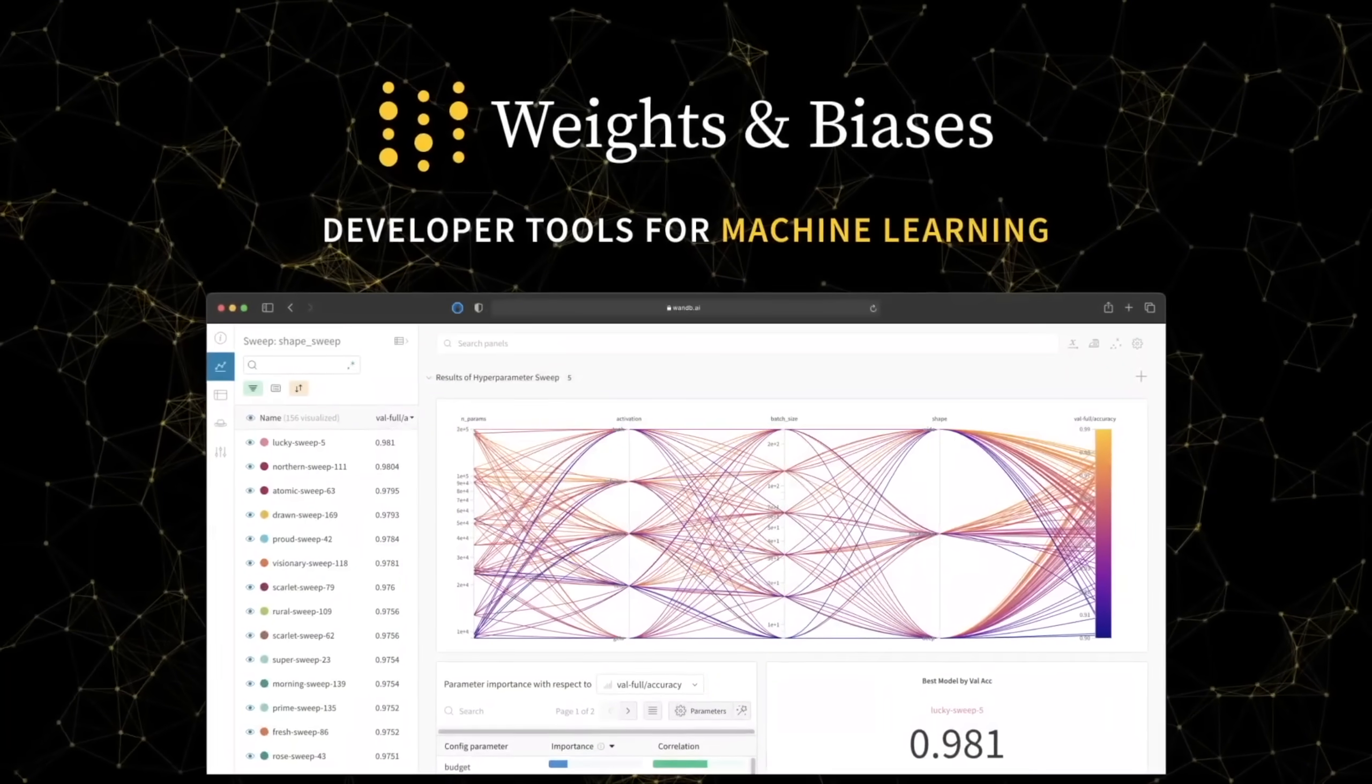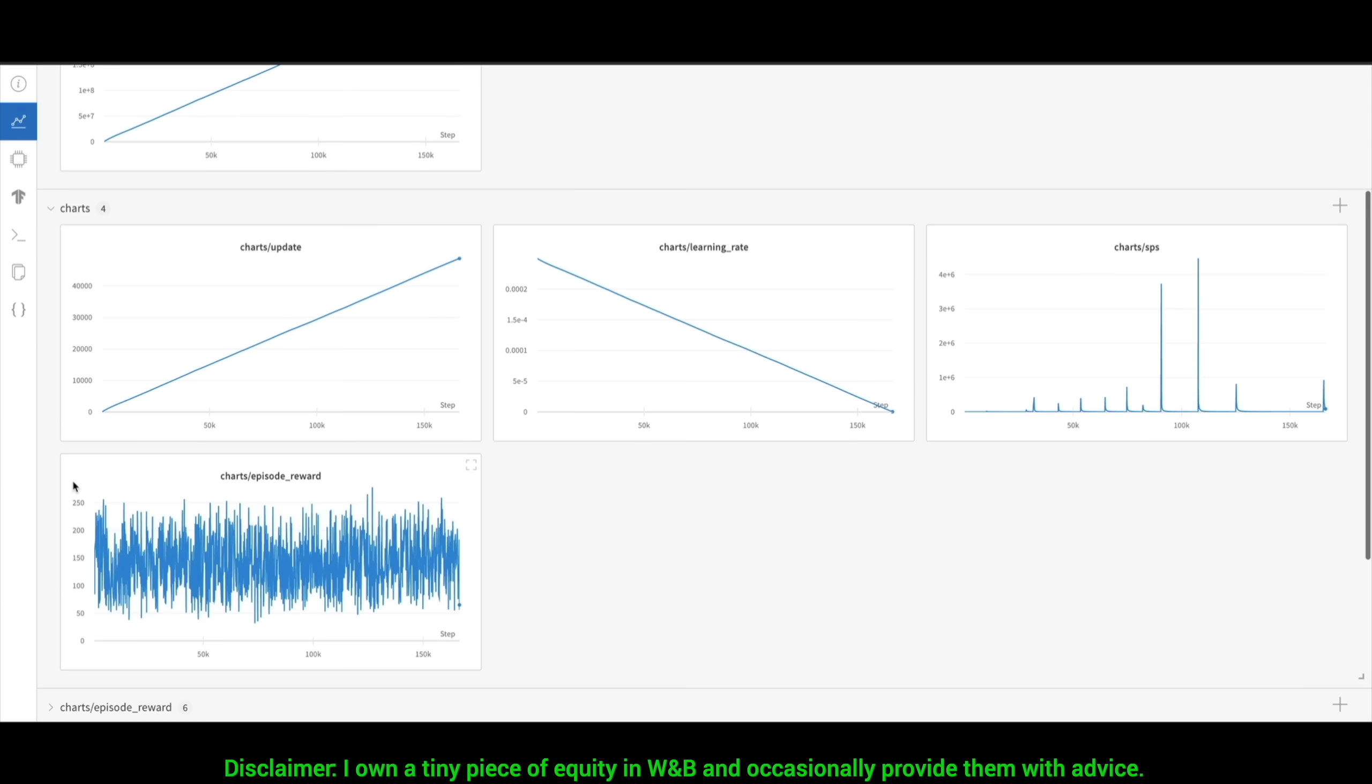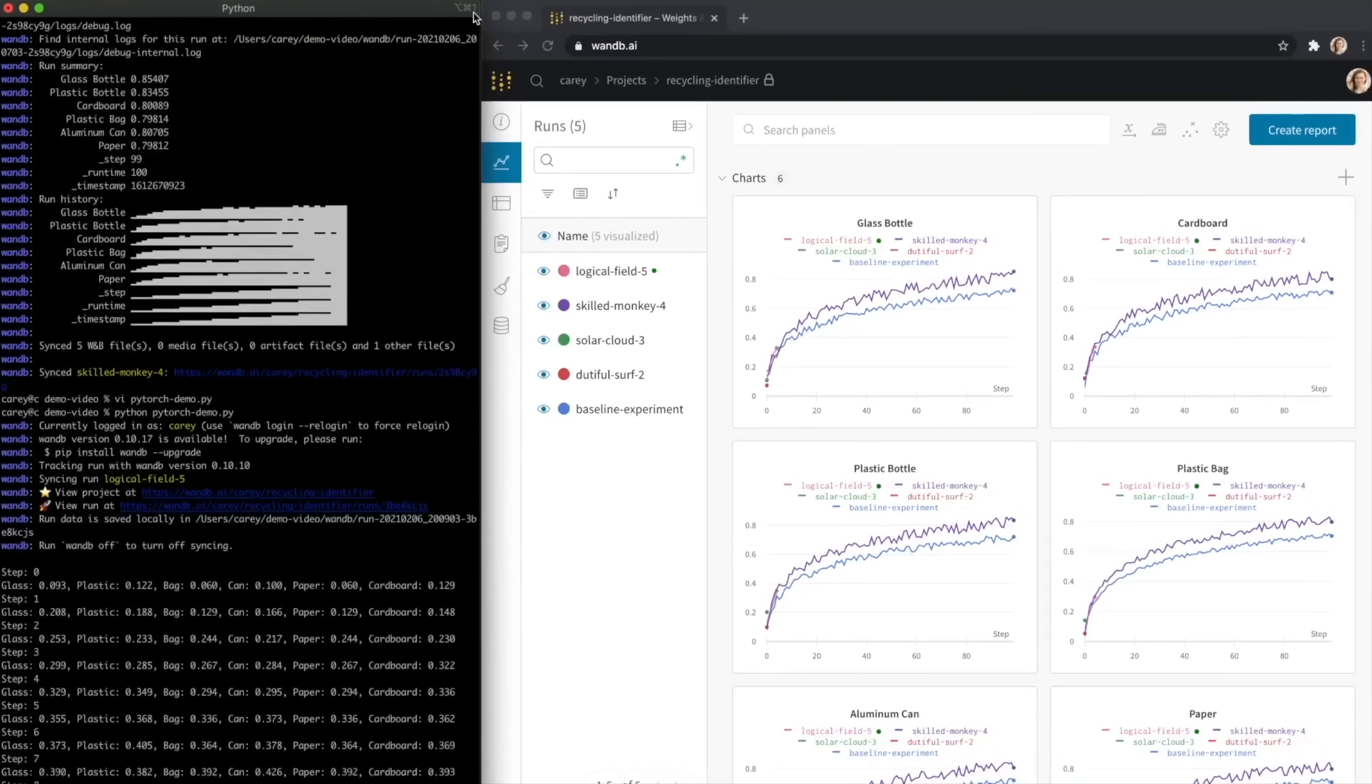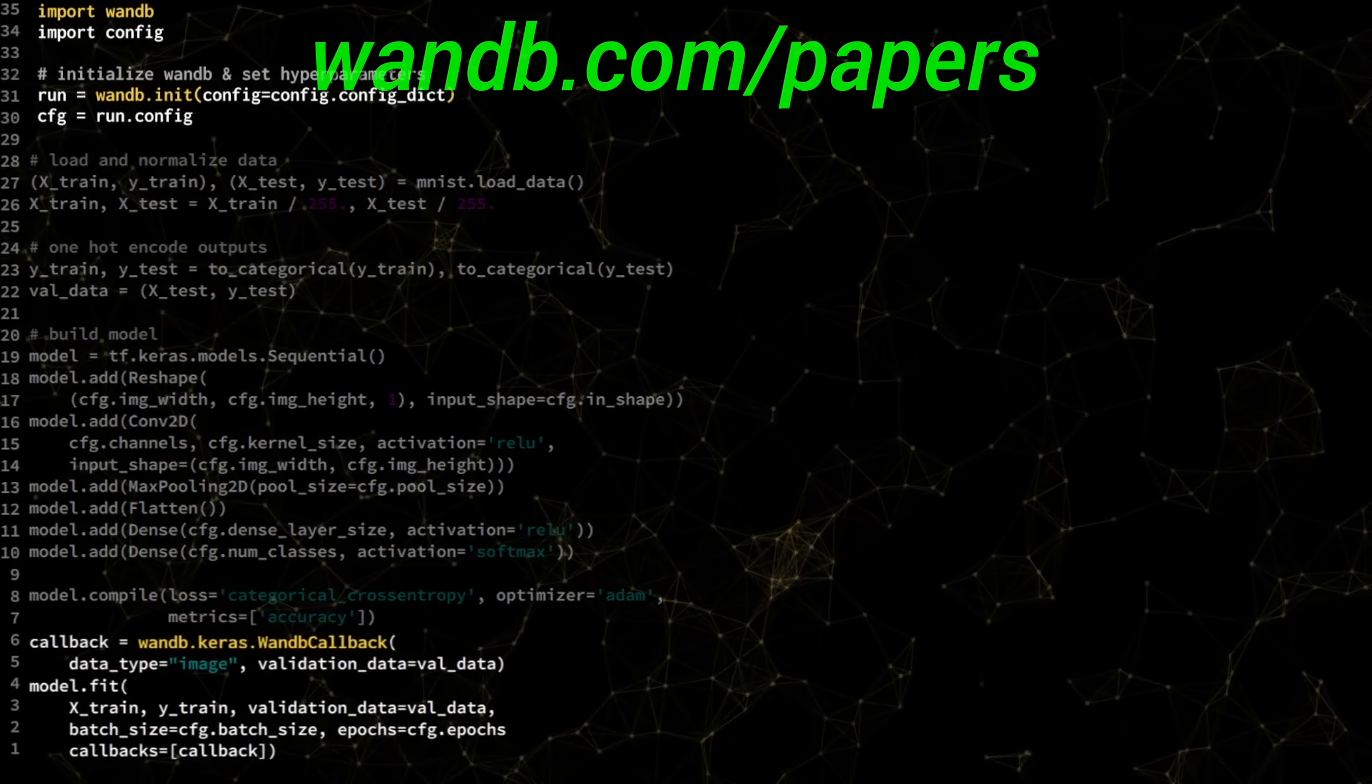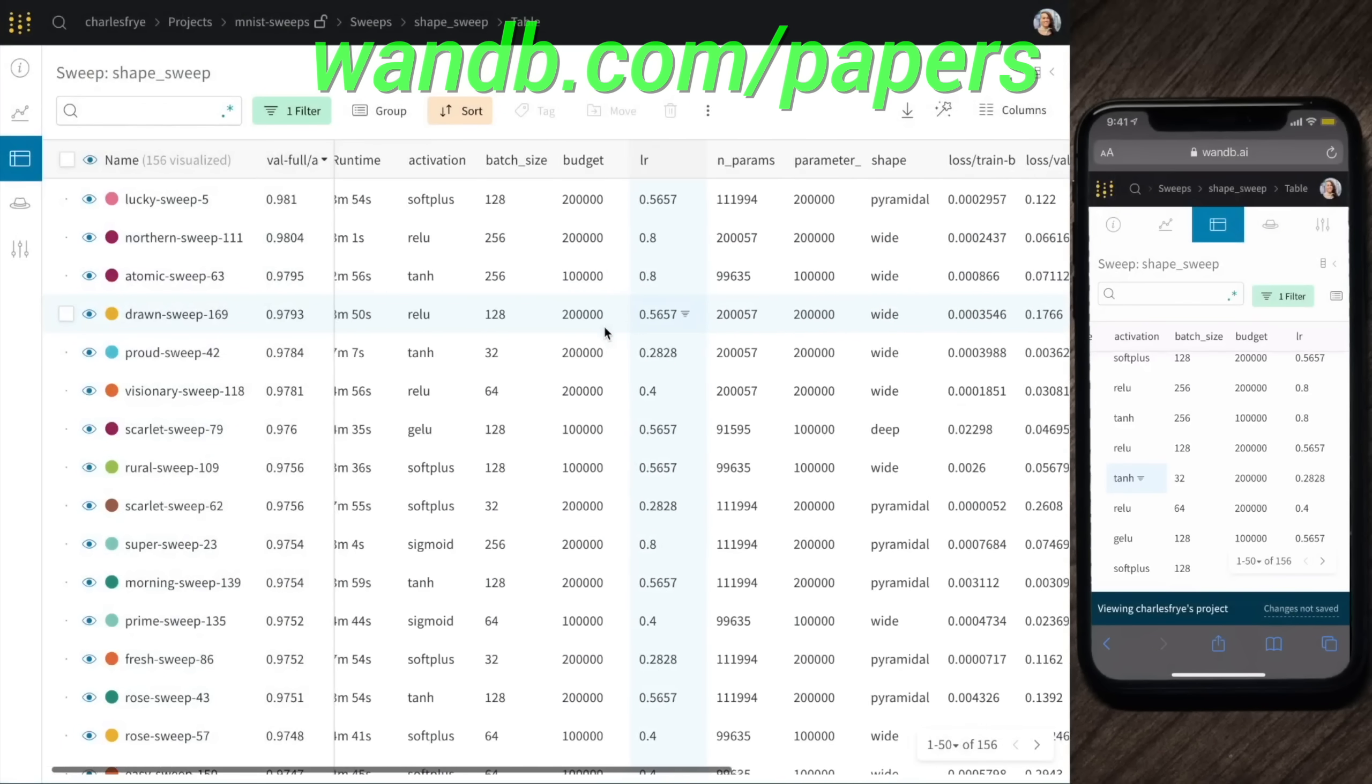Weights and Biases provides tools to track your experiments in your deep learning projects. Using their system, you can create beautiful reports like this one to explain your findings to your colleagues better. It is used by many prestigious labs including OpenAI, Toyota Research, GitHub, and more. And the best part is that Weights and Biases is free for all individuals, academics, and open source projects. Make sure to visit them through wnb.com slash papers or just click the link in the video description and you can get a free demo today. Our thanks to Weights and Biases for their longstanding support and for helping us make better videos for you. Thanks for watching and for your generous support, and I'll see you next time!